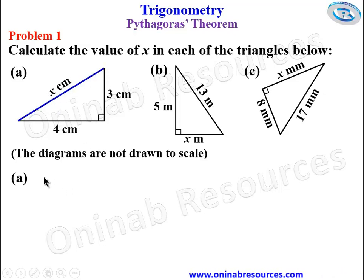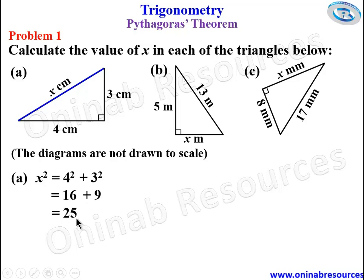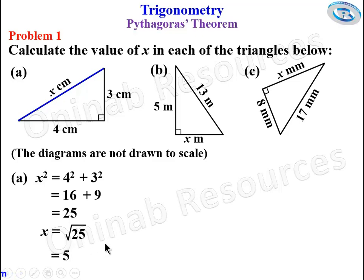By Pythagoras' theorem, X squared is equal to 4 squared plus 3 squared. 4 squared is 16, and 3 squared is 9, so X squared equals 16 plus 9, which gives 25. Therefore X is equal to the square root of 25, which gives 5. We are done finding the value of X in problem one A.